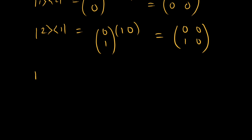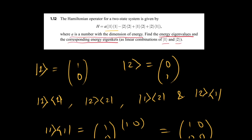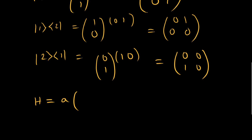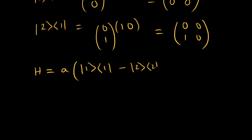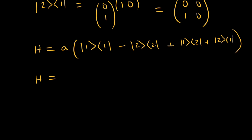So the Hamiltonian H is a times (|1⟩⟨1| − |2⟩⟨2| + |1⟩⟨2| + |2⟩⟨1|). Adding up all these matrices gives us a times [[1,1],[1,−1]], since the |2⟩⟨2| term contributes a minus sign to the bottom-right element.